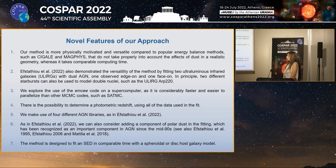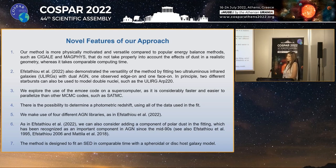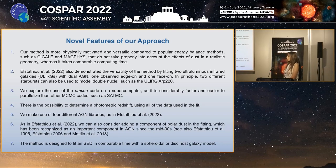Furthermore, it is possible to determine a photometric redshift using all of the data used in the fit. As I have already said, we explored the impact of four different AGN models in order to constrain the properties of the obscuring torus. We can also add a component of polar dust in the fit, which is an important component in AGN. And finally, we can fit an SED in comparable time with either a spheroidal or spiral host galaxy model.